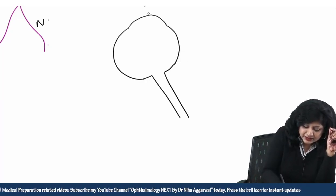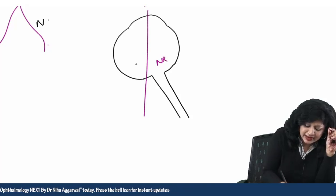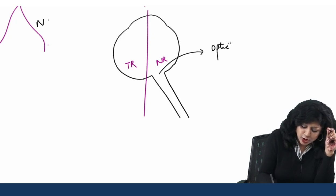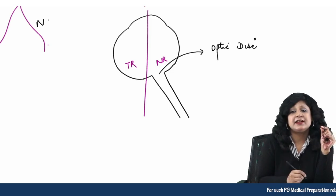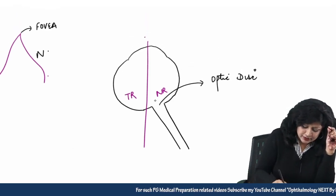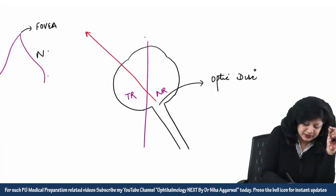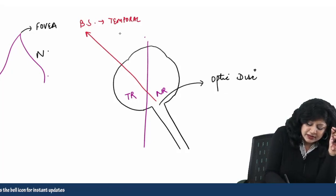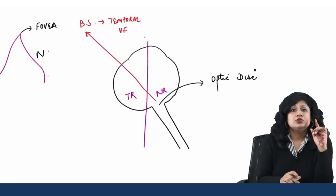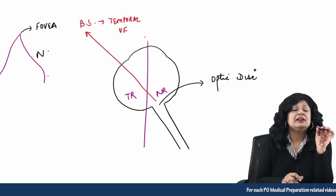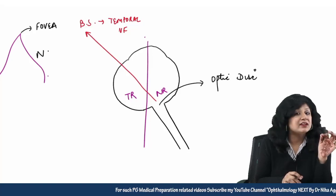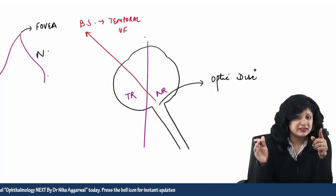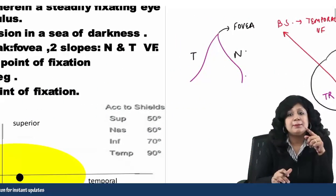If I divide the eye into two parts, this is the nasal retina and this is the temporal retina, and this one is your optic disc. The optic disc will always lie in the nasal retina, and therefore the blind spot, which corresponds to this optic disc, will lie in the temporal visual field. If you go with this concept, you will never get it wrong.